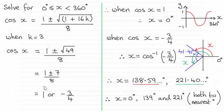Hi there. Now for this question we were given that cosine x equals 1 plus or minus the root of 1 plus 16k all divided by 8, and asked to solve this equation when k equals 3 for angles of x greater than or equal to 0 degrees but less than 360 degrees.